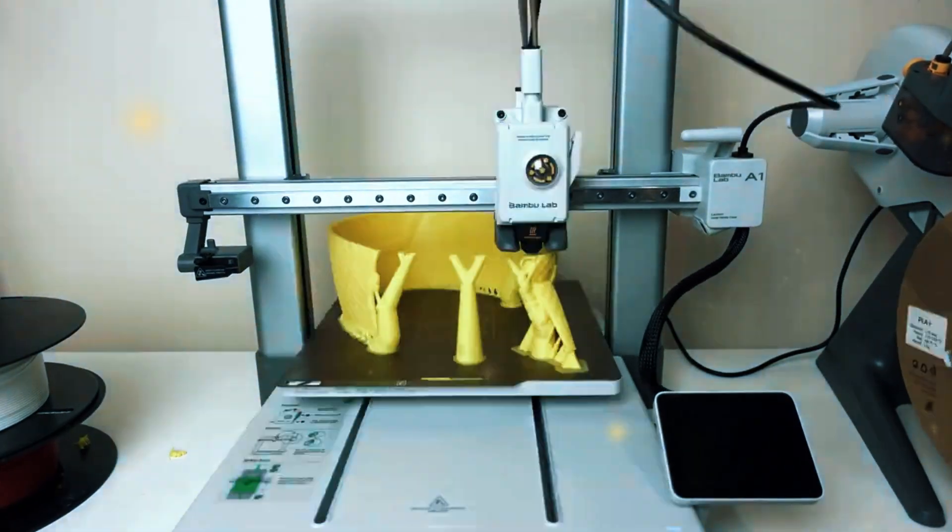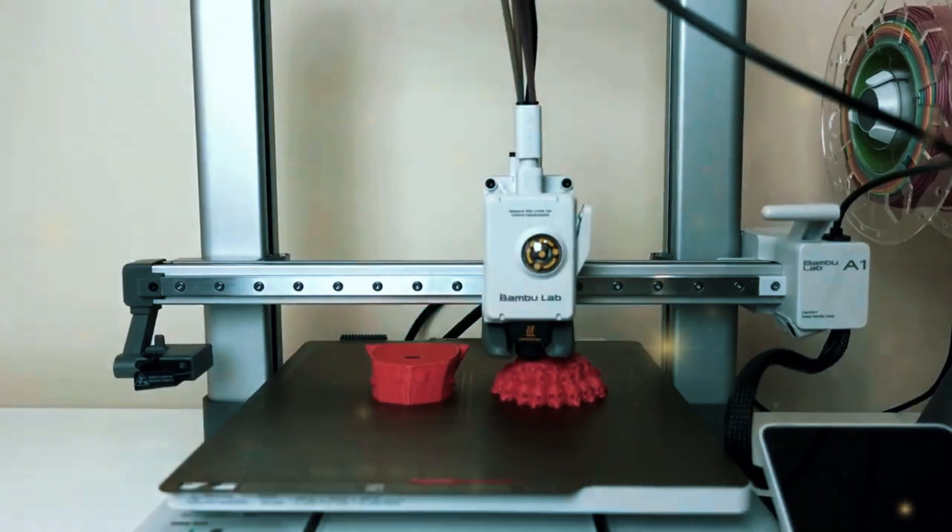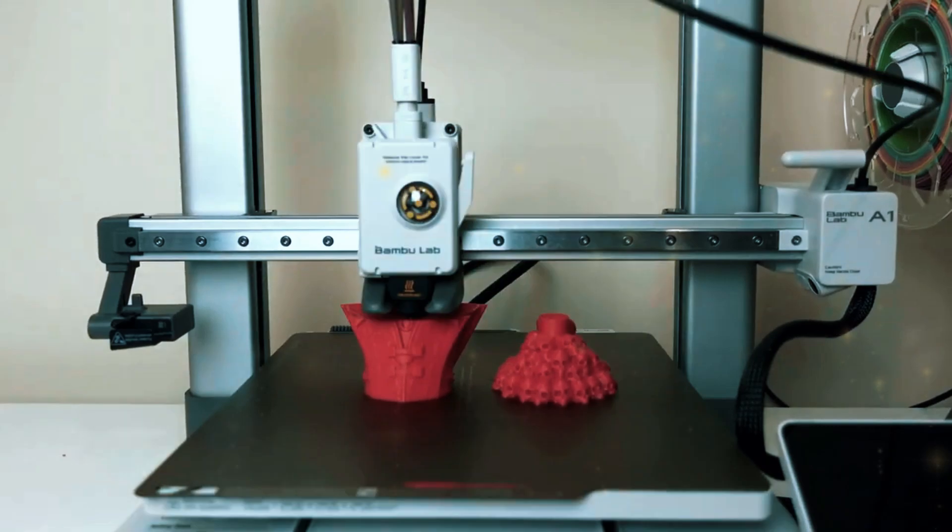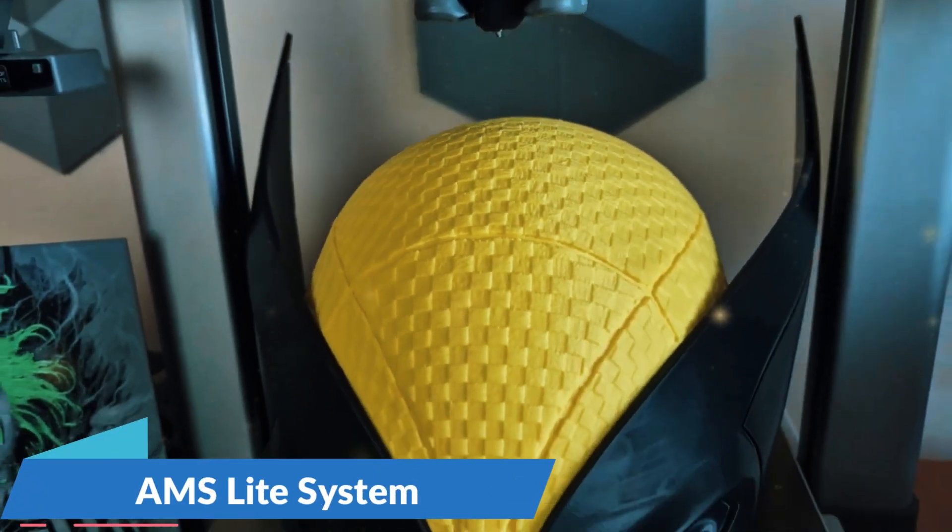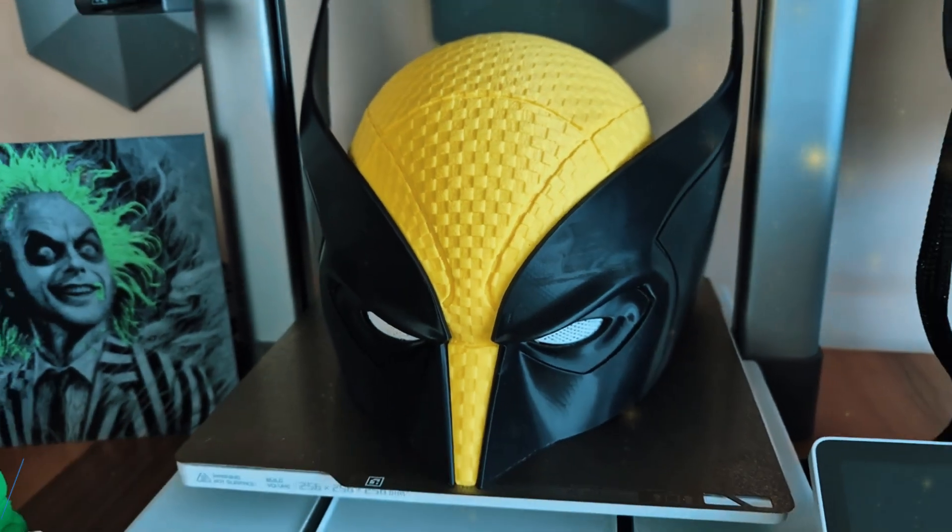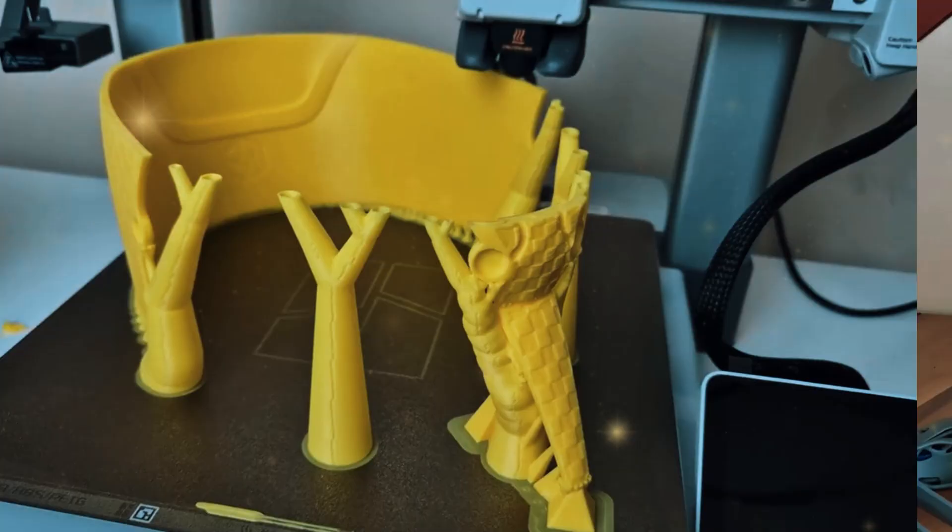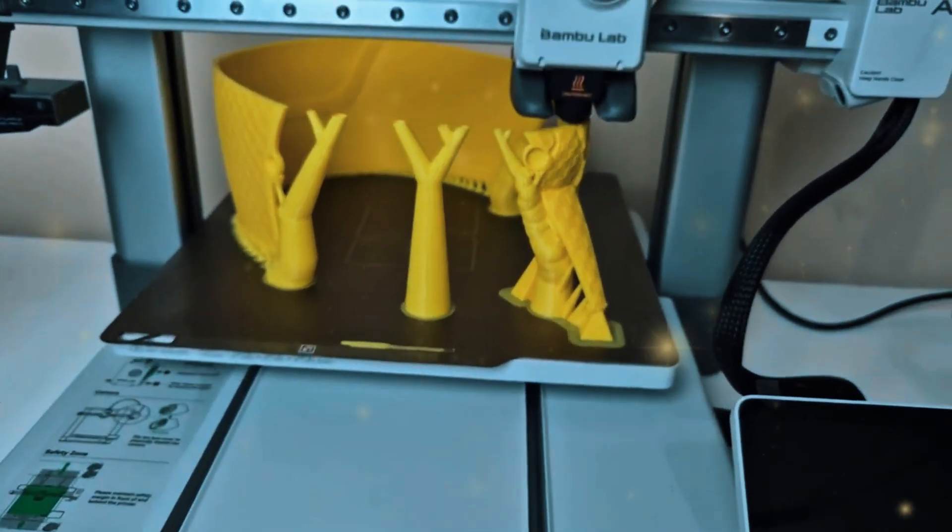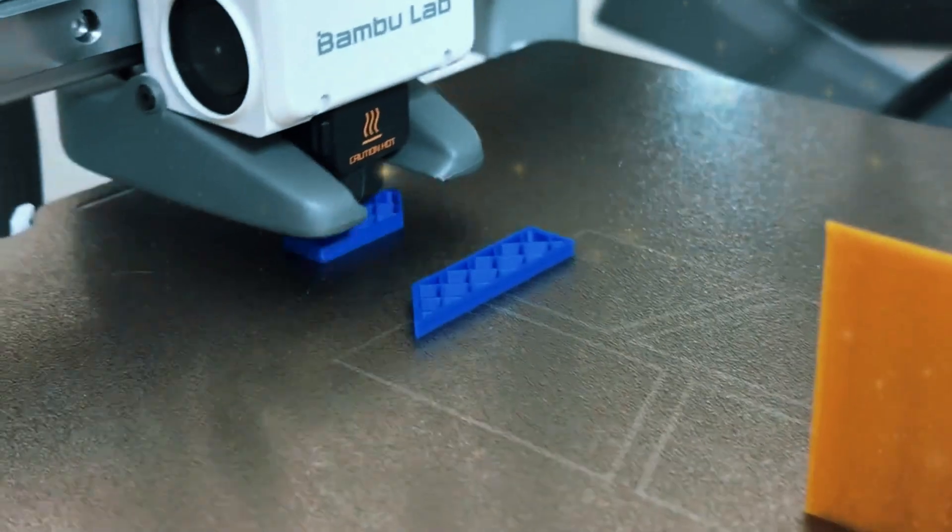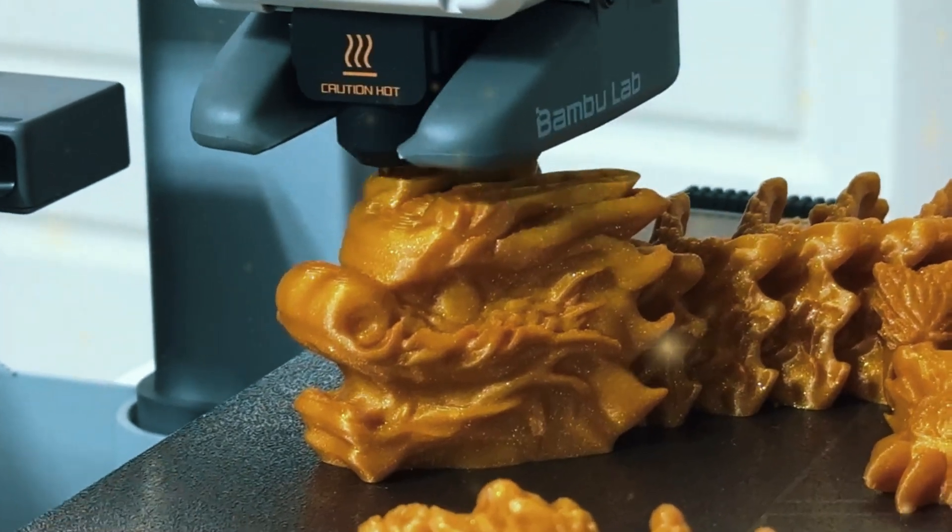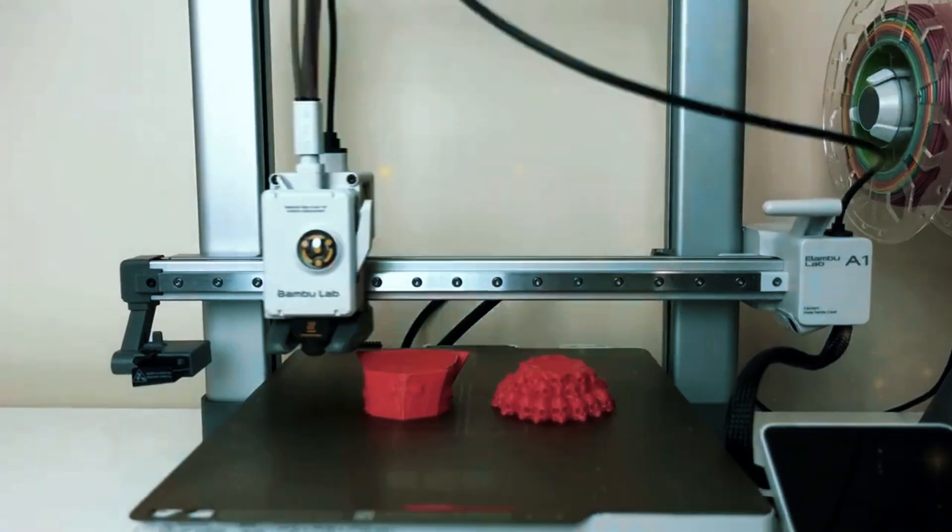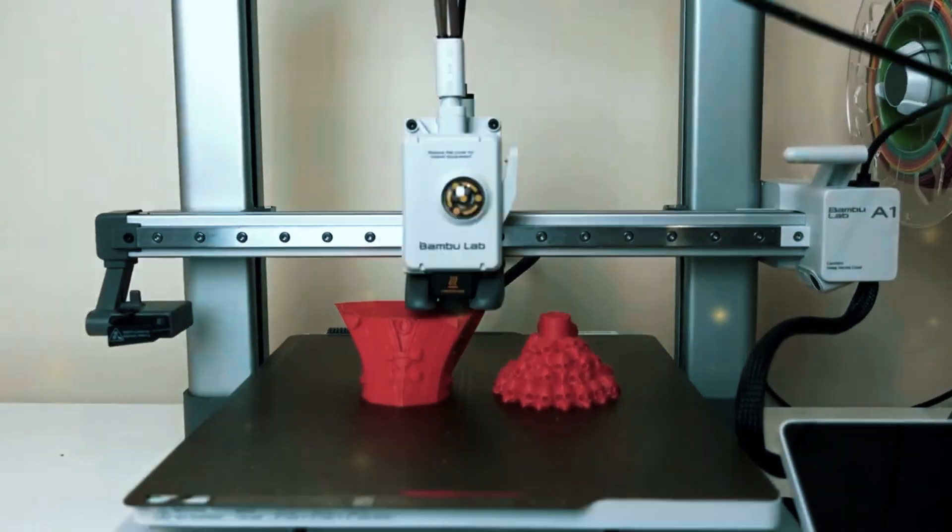One of the most exciting features of the Bamboo Lab A1 is its ability to handle multi-color printing. With its AMS light system, the printer can support vibrant multi-colored prints, allowing you to bring your creative designs to life in stunning detail. Whether you're making simple prototypes or more complex models, the multi-color feature gives your projects a unique and professional touch.